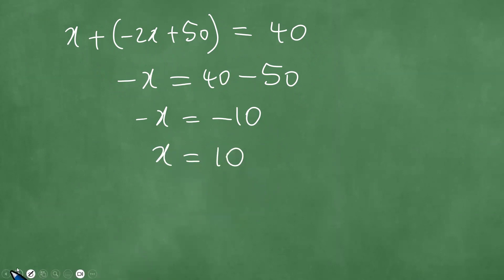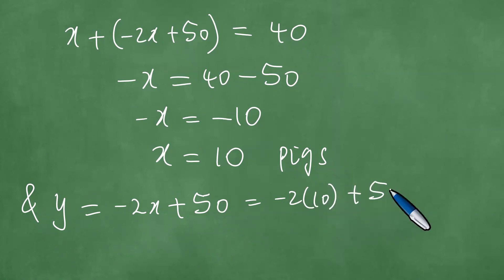We know that X is the number of pigs, so we have the exact total number of 10 pigs. And Y is minus 2X plus 50, which is minus 2 times 10 plus 50, and this is minus 20 plus 50, which is 30.